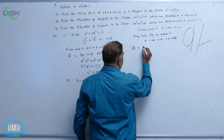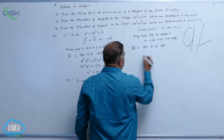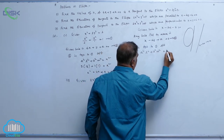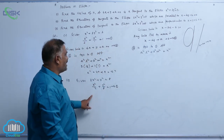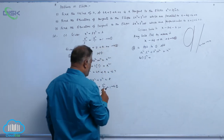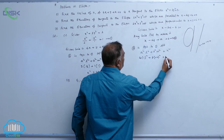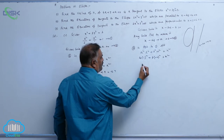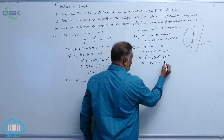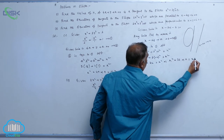Equation 2 is tangent to equation 1 if and only if we apply the same condition: a squared l squared plus b squared m squared equal to n squared. Here a squared is 4, l equals 1 so l squared is 1; b squared equals 8, m equals minus 2 so m squared is 4. This gives 4 plus 32 equal to k squared, so k squared equals 36.